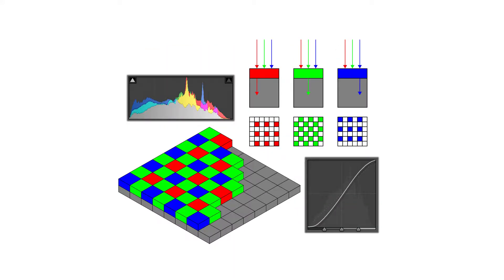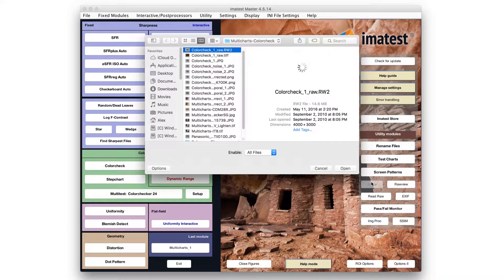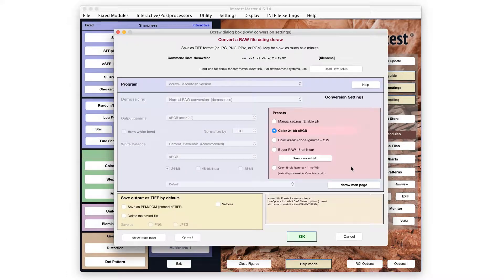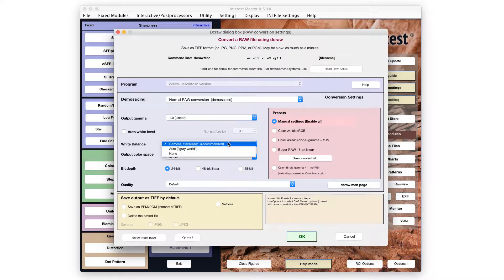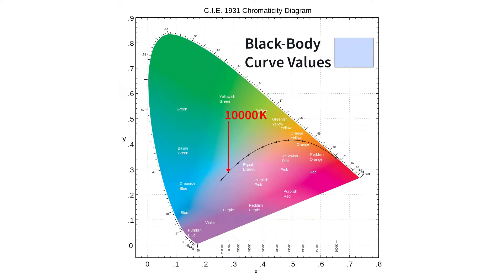Demosaicing converts the Bayer color filter array pattern into a standard color format, typically with RGB channels. During raw processing, white balance and color calibration can be adjusted to produce the desired colors in the output color space, such as sRGB or Adobe RGB.